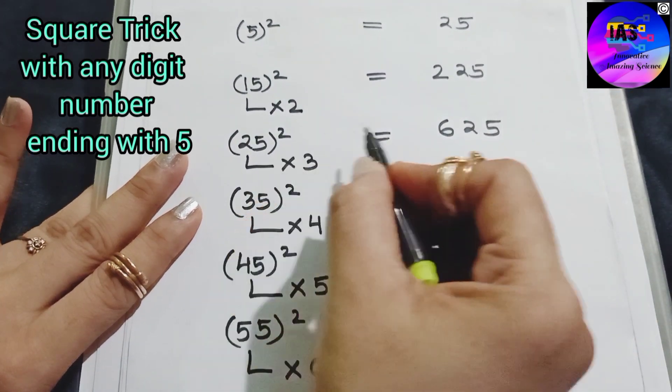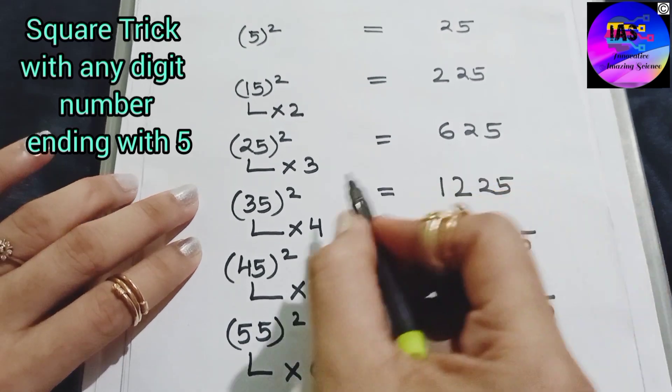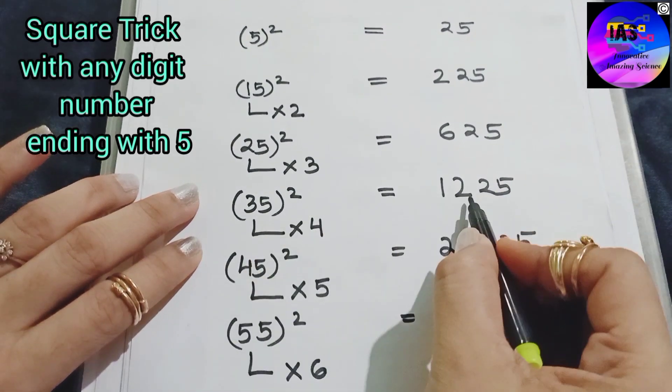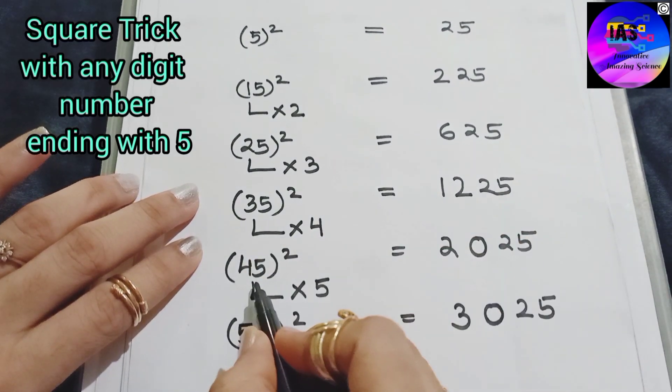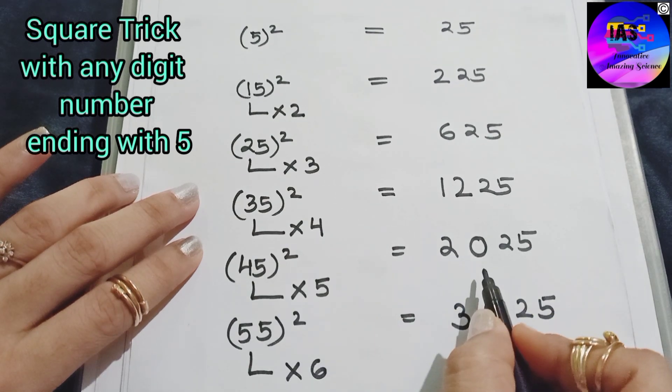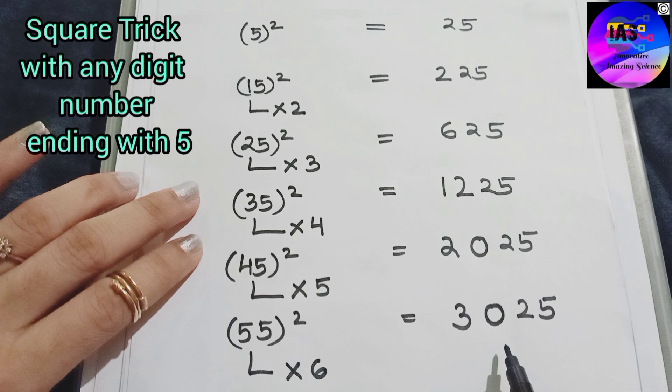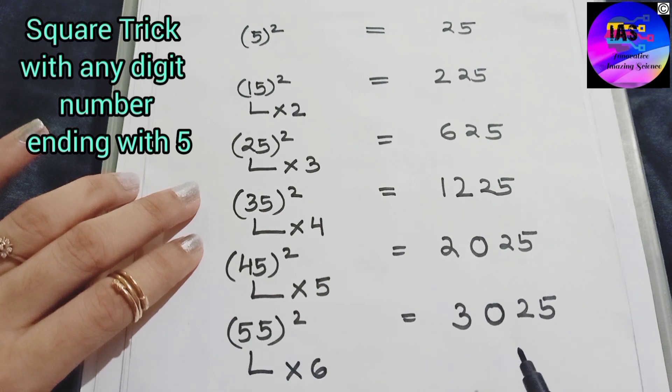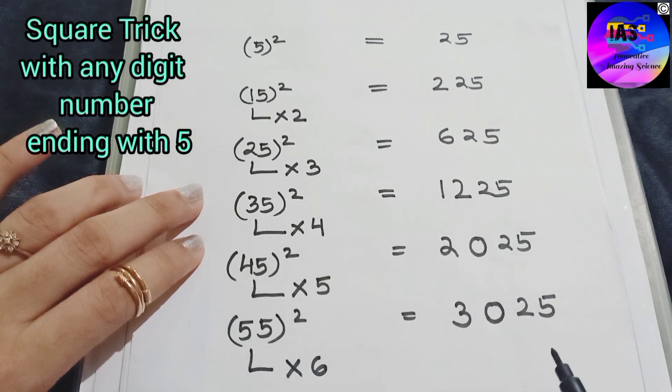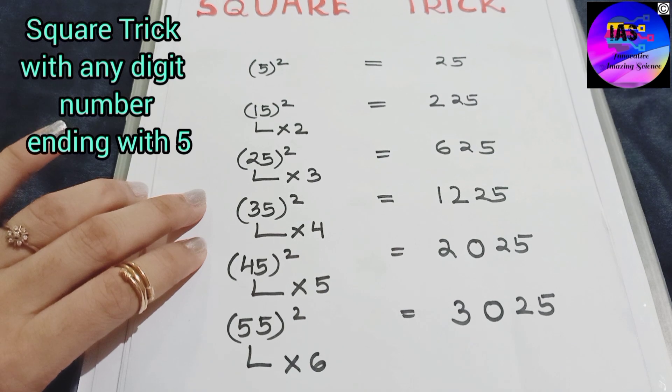25 square is 625, 35 square is 1225, 45 square is 2025, and 55 square is 3025. So we have done with our answers, but how did we find it out?